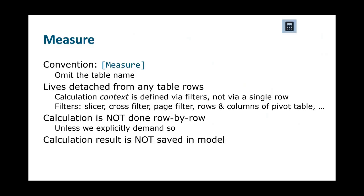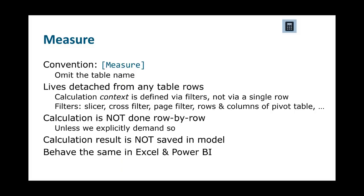The calculation in a measure is definitely not done row by row — there's no row context, except we can force it, as we'll see later. Importantly, the result of a measure is not saved in the model. Building many measures won't increase the size of the Power BI file. The formula text is stored, but no space is used for results. Also, refreshing the Power BI file is not influenced by measures — the refresh won't be slower and the file won't grow. Measures also behave the same whether connecting from Excel or Power BI, and Excel allows measures in the values portion of a pivot table.